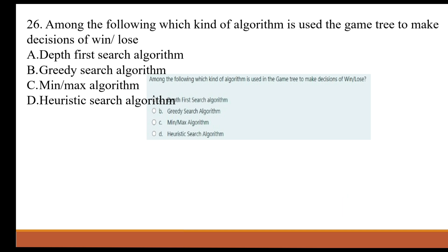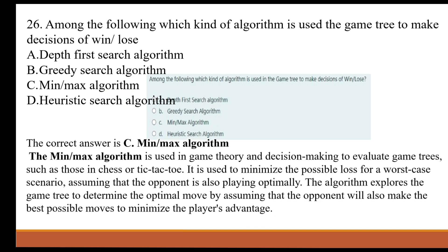The correct answer is C, the Minimax algorithm. The Minimax algorithm is used in game theory and decision-making to evaluate game trees such as in chess or tic-tac-toe. It is used to minimize the possible loss for the worst-case scenario, assuming that the opponent is also playing optimally. The algorithm explores the game tree to determine the optimal move by assuming the opponent will also make the best possible moves to minimize the player's advantage.